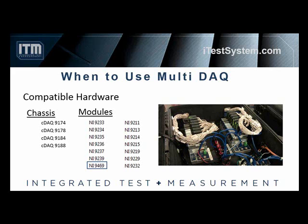Todd, tell us about an example of when you used multi-deck for a specific application. Recently we faced a challenge of testing a large complex on-highway vehicle. We knew it would take hundreds of channels to collect the data needed to measure the loads of this large piece of equipment. With the use of multiple chassis and NI-9469 sync modules, we were able to collect over 200 channels of accelerometer and strain gauge signals plus speed and GPS, all at once, all synchronized. If you're interested in more on that topic, we have a case study available on our website, iTestSystem.com.